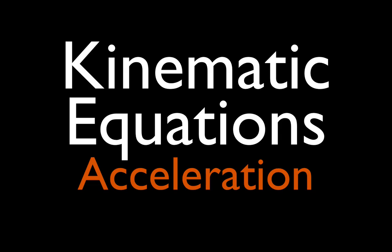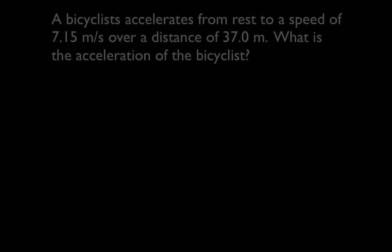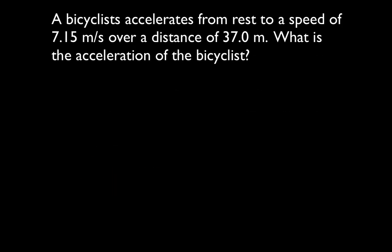In today's video, I'm going to go over two examples of how we use the kinematic equations for one-dimensional horizontal motion. In this video, we're going to do two problems where we're going to solve for the acceleration, and this is the first example. Example number one says: we have a bicyclist who accelerates from rest to a speed of 7.15 meters per second over a distance of 37 meters, and we want to know what is the acceleration of that bicyclist.